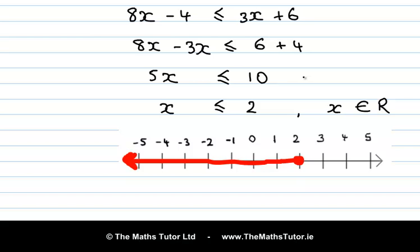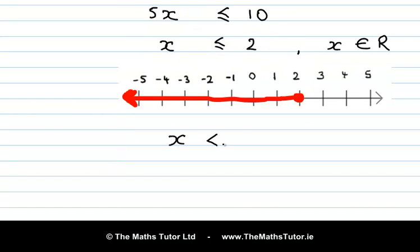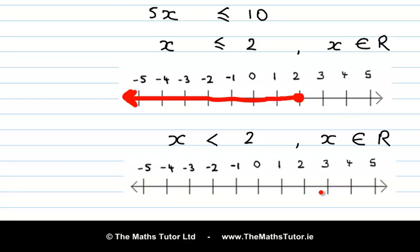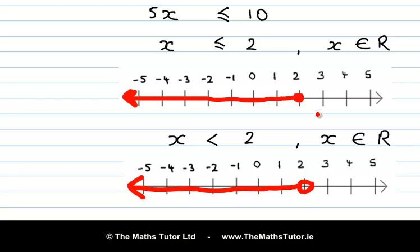Just for comparison, if our inequality was x is less than 2 and x belongs to the real numbers, it would look slightly different. This time x is less than 2, so 2 is not included — we put an empty circle around 2, and then draw a solid line all the way back, going on forever. This shows that the solution set includes everything up to 2 but not including 2 itself — so 1.99999 would be included, but not 2. This one has a solid circle to show that x is less than or equal to 2, so 2 is included.